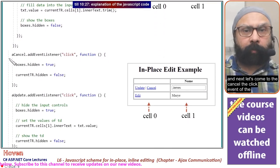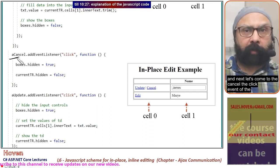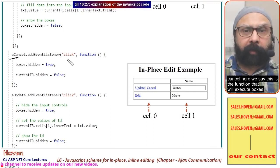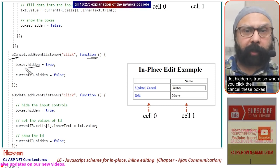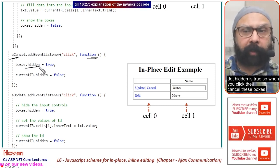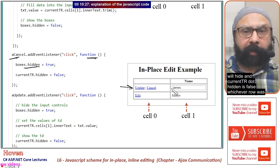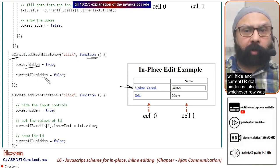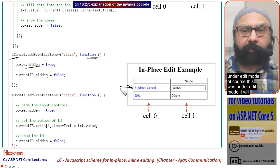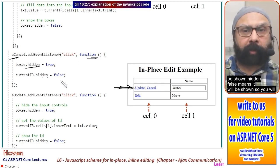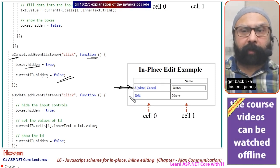Next, let's come to the cancel click event. This function executes boxes.hidden = true. When you click cancel, the boxes will hide, and currentTr.hidden = false. Whichever row was under edit mode will be shown—hidden false means it will be shown. You get back to the normal edit state.